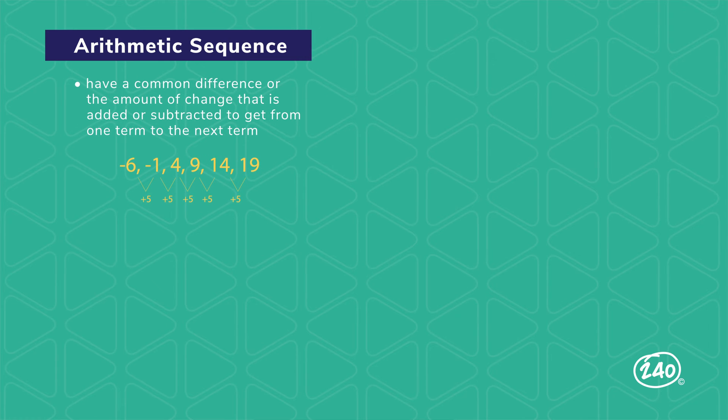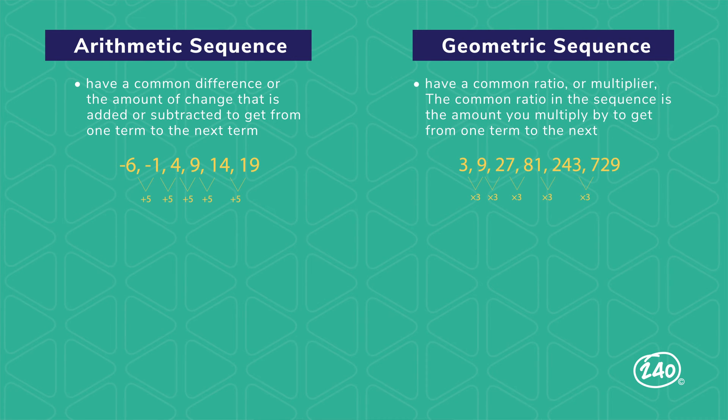How about we look at a couple of sequence types? First up, you've got arithmetic sequences, and these are usually the easiest to figure out. They have a common difference between terms, meaning you add or subtract the same number every time you go from one term to the next. In this example, we add 5 to get from one term to the next. Then you've got geometric sequences. In these, you need to either multiply or divide by the same number to go from one term to the next. In this example, we multiply by 3 each time.